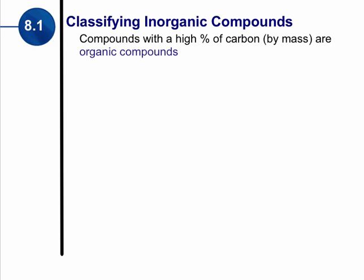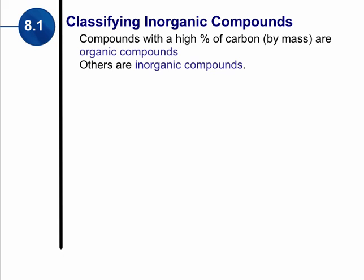First of all, if we have an organic compound, an organic compound is something that has a high percentage of carbon. This is what we consider organic compounds. If something is organic, it has a high percentage of carbon. If it doesn't have a high percentage of carbon, then it's considered inorganic.